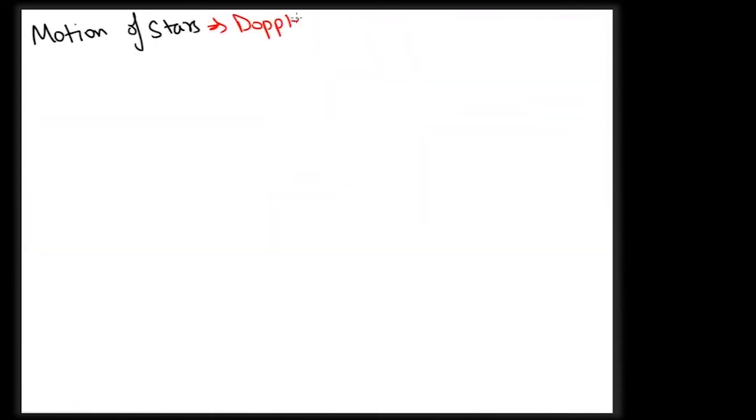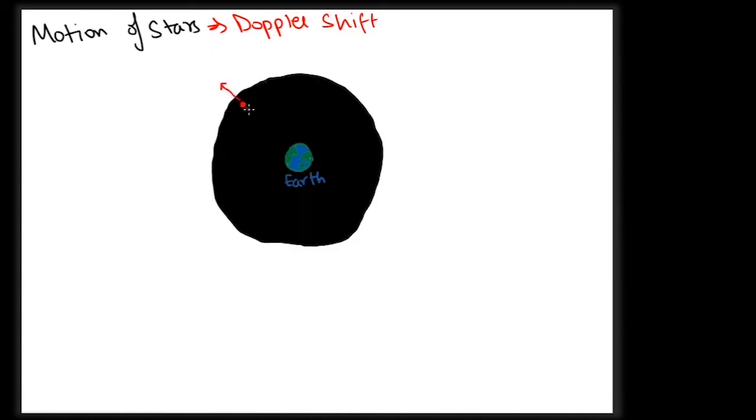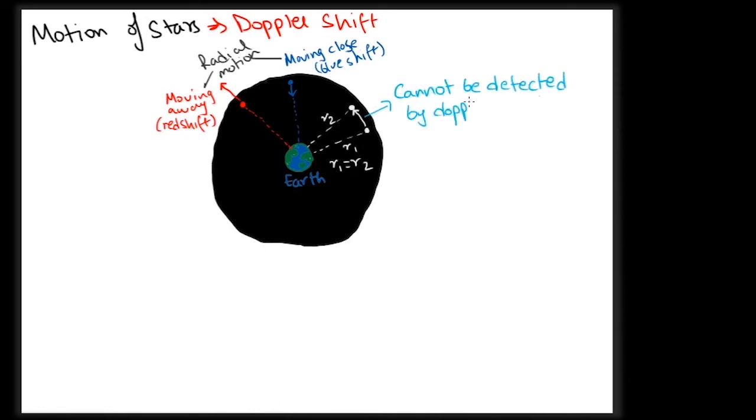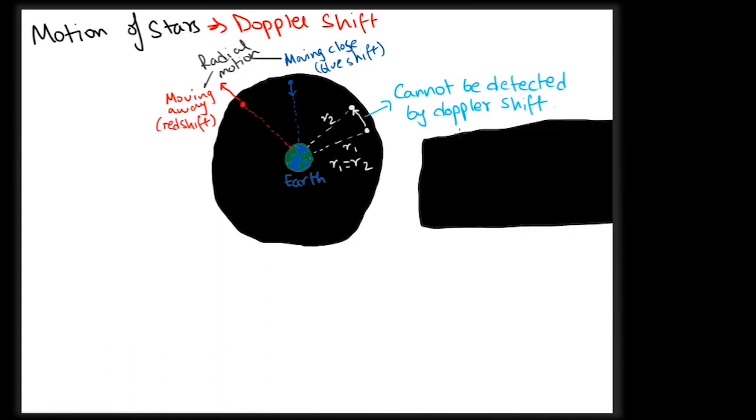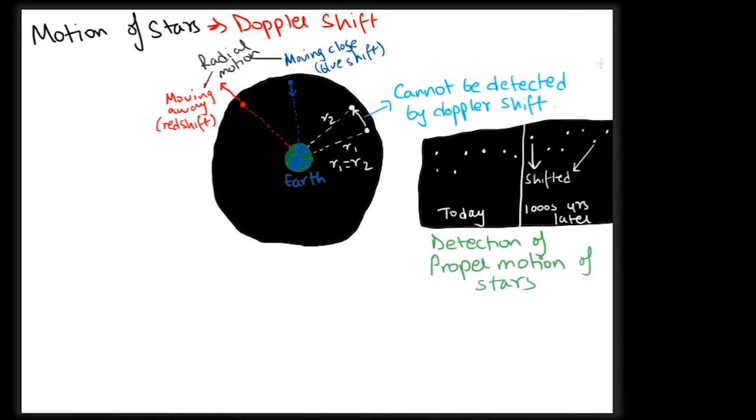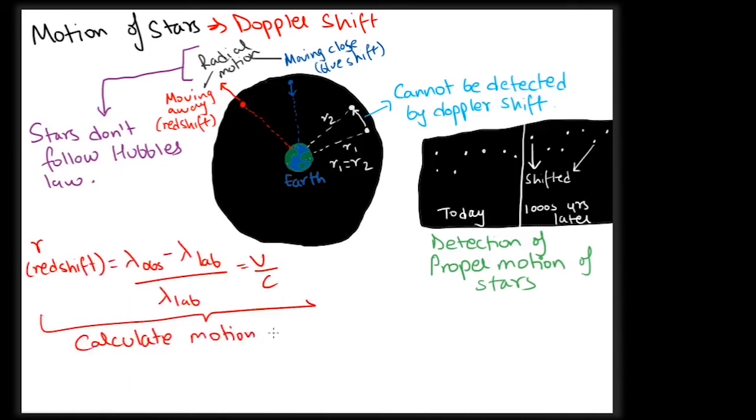The same concept of motion of galaxies can be used to detect the motion of stars with respect to us. This can only be used for stars moving radially to us. But proper motion, in which stars move across our line of sight with distance remaining the same, cannot be detected using the spectra. Proper motion, though, can be detected by observing the shift in the position of a star in the Earth's sky over years. The stars do not move according to Hubble's law, but do obey the rule of Doppler shift which can be used to calculate their motions.